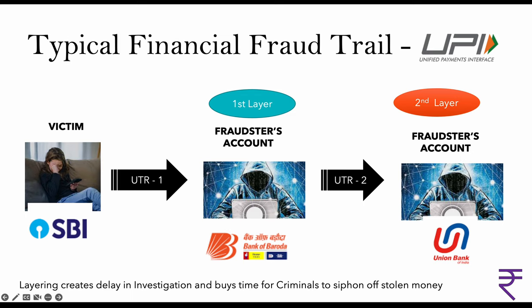This is called a second layer account — money came to the first layer and was then transferred further. Remember, the UTR number is very important because it connects the two banks; you can query based on it. This is called layering, used to delay investigations and give criminals time to take out the money. In a typical fund trail, seven to eight layers can be seen.